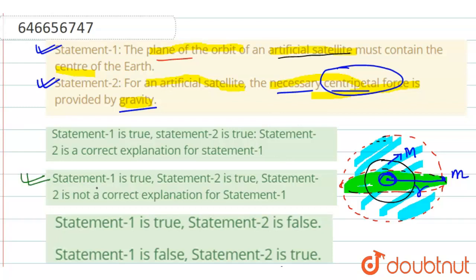which says that statement 1 is true, statement 2 is true, but statement 2 is not a correct explanation for statement 1, that if centripetal force is balanced by gravity, then the center should contain this statement. So therefore, our correct option is option number 2.